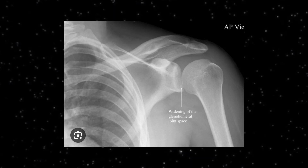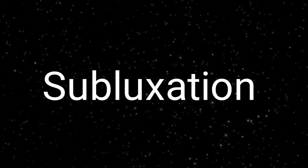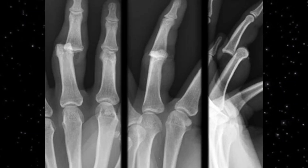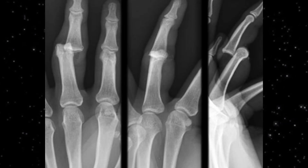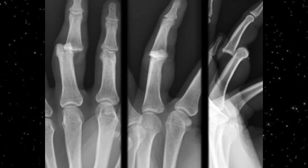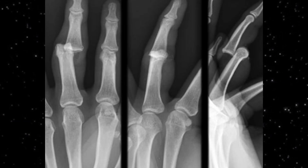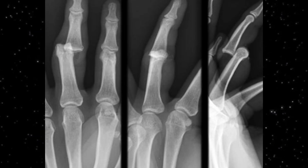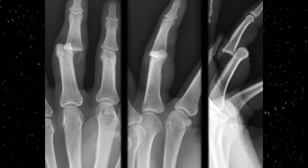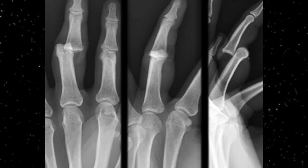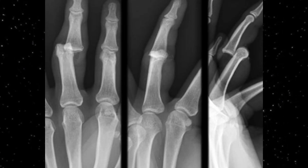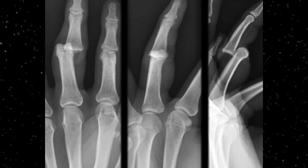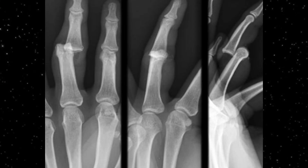After confirming dislocation, you should also look for subluxation. In subluxation there will be some partial contact between the articular surfaces. This is an example of subluxation — a radiograph of a mature hand where some bones have been subluxed, especially at the distal joint. Subluxation means there is still partial contact between the articular surfaces, not centrally but just to the side — you would have to write the word subluxation.